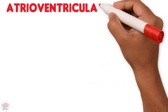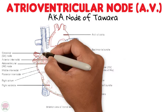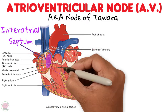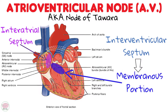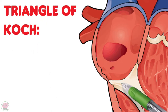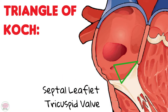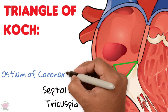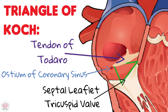The third structure is the atrioventricular node, also known as the node of Tawara. It is an oblique structure located within the interatrial septum, penetrating the membranous portion of the interventricular septum. More specifically, it is located in the center of an area known as the triangle of Koch, whose limits are: the attachment of the septal leaflet of the tricuspid valve inferiorly, the ostium of the coronary sinus basally, and the tendon of Todaro superiorly — a tendon that is a continuation of the inferior vena cava valve with the valve of the coronary sinus.